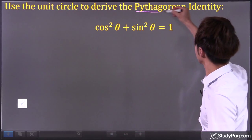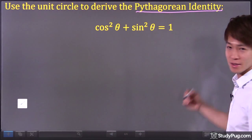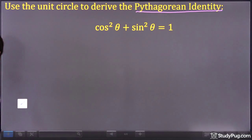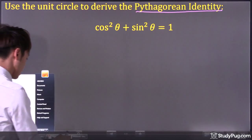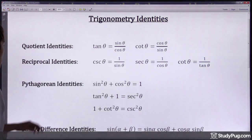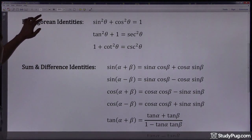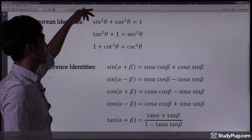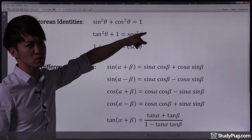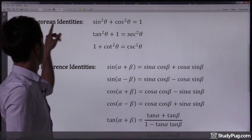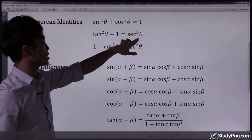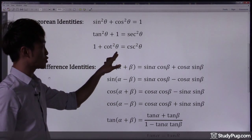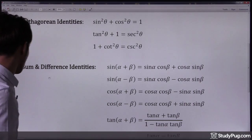Let's talk about Pythagorean identities. There are three Pythagorean identities. If you take out your formula sheet, you can find them listed. The first one is sine squared plus cosine squared equals one. The second one is tangent squared plus one equals secant squared. And the last one is one plus cotangent squared equals cosecant squared.